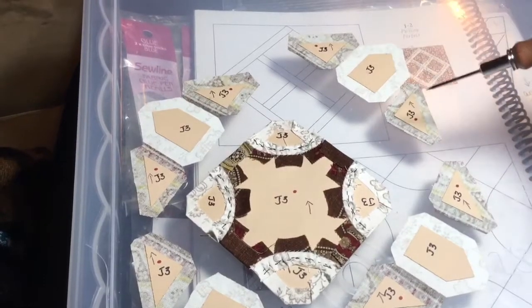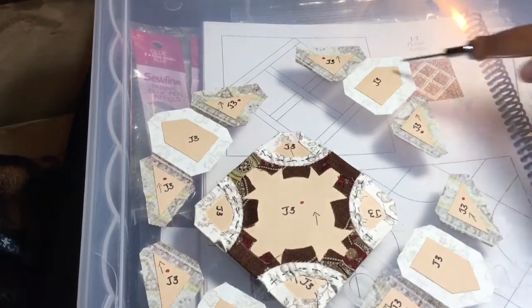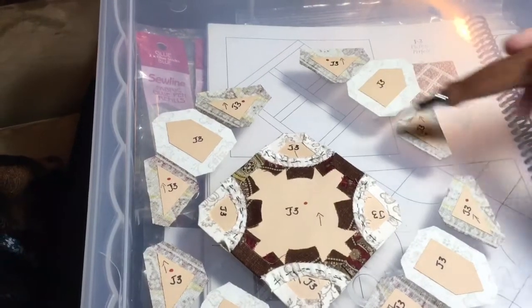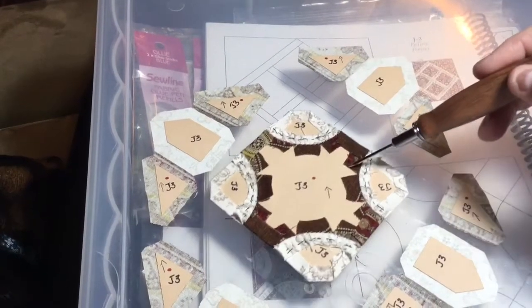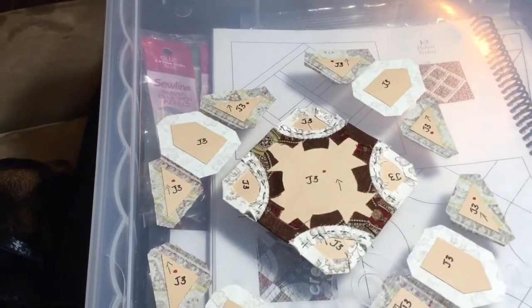Once I baste my triangles, my arrows won't be seen. So that's why I want to make sure that I baste and assemble one section, and then attach it all at once, and then move on to my second section so I don't get lost.